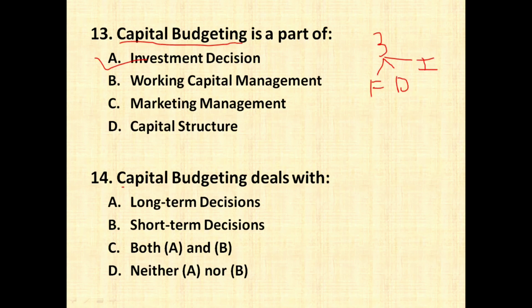The next question is: capital budgeting deals with what? As I said, capital budgeting deals with long-term decisions, while short-term decisions are dealt with by working capital management. So we have two concepts: working capital management, which handles short-term day-to-day business decisions, and capital budgeting, which handles long-term capital decisions.